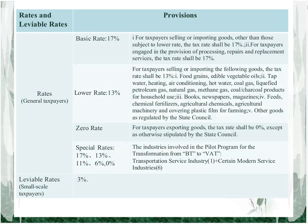This form shows the provisions for rates. For general taxpayers, the basic rate is 17 percent. There are some special items subject to lower rates. For taxpayers exporting goods or some special services, they should be subject to zero rate. There is also some special rate for the pilot program. For small-scale taxpayers, the levy rate is 3 percent.